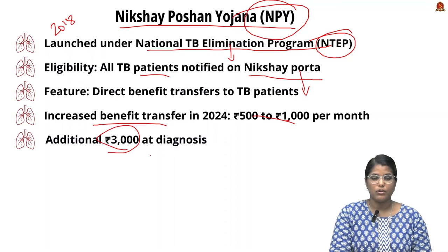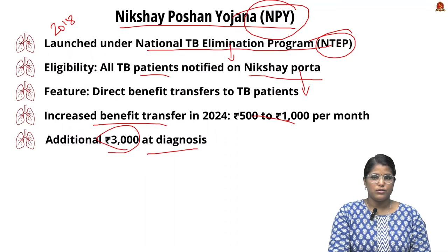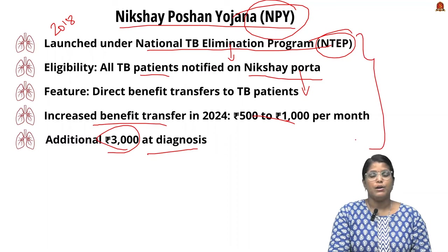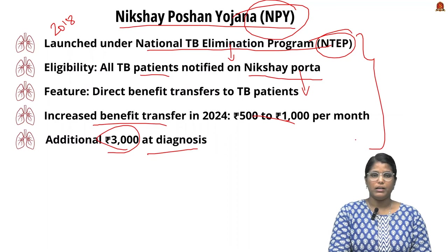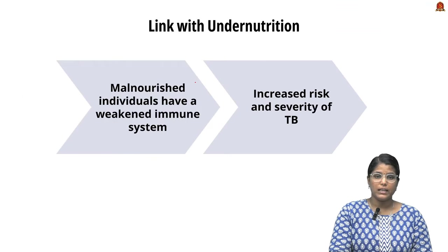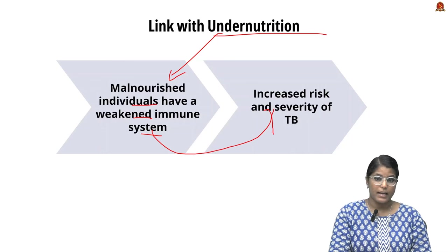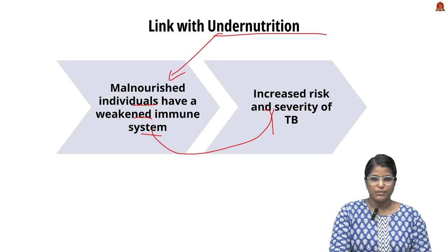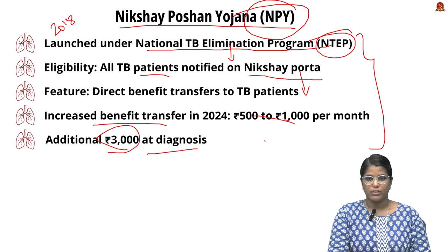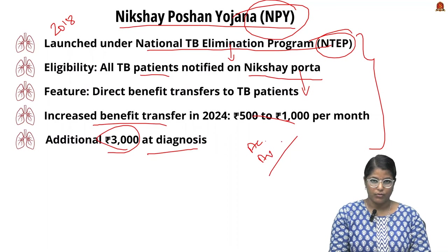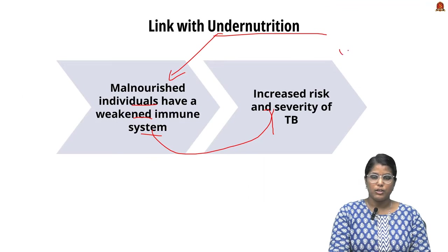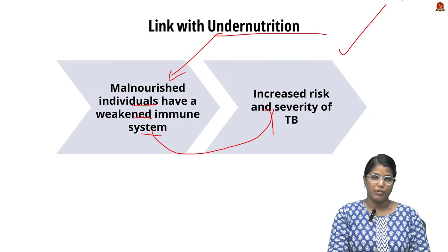Under the scheme, patients receive a direct benefit transfer of ₹500 to ₹1000 per month, plus an additional ₹3000 at diagnosis. However, tuberculosis is more linked to under-nourishment — malnourished individuals have a weakened immune system, which increases the risk and severity of tuberculosis. This scheme focuses only on accessibility and availability; we also need to focus on increasing nutrition levels and improving immunity.